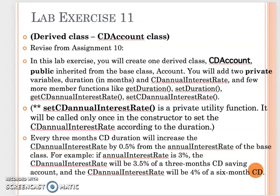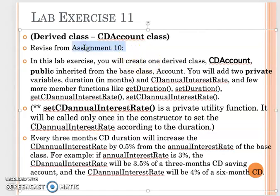Let's talk about lab exercise 11, which is about practicing inheritance relationships. This inheritance relationship will be based on your previous assignment's account class. We will make the account class become the base class, and the derived class we call the CD account class. CD account stands for certificate of deposit.